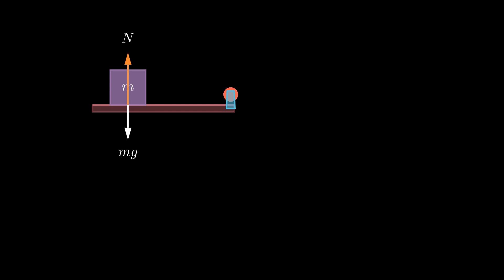A force F_A is applied to the object through a weight attached to a string, as shown on the screen. The frictional force acts in opposition to the applied force, thereby keeping the object from moving. This frictional force acts parallel to the surface but in the opposite direction of the applied force, with its magnitude being equal to that of the applied force.